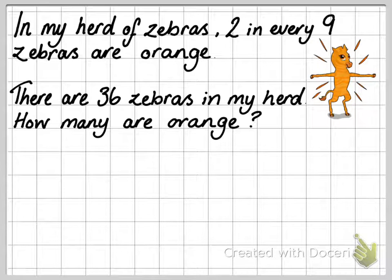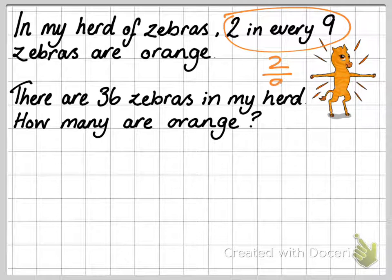So now I'm going to go through a proportion word problem. In my herd of zebras, 2 in every 9 zebras are orange. Not sure there's such things as an orange zebra, but never mind. There are 36 zebras in my herd. How many are orange? I can work this out by representing this using dots. First of all, it says 2 in every 9. So what's that as a fraction? It's 2 out of 9.